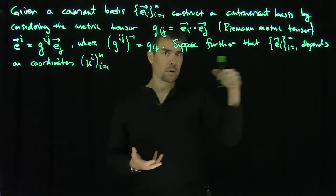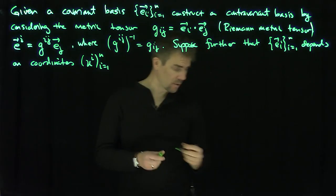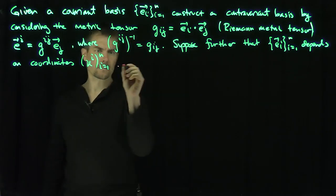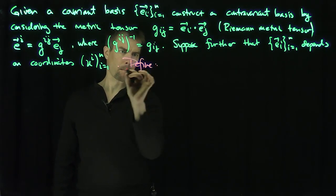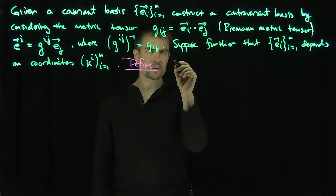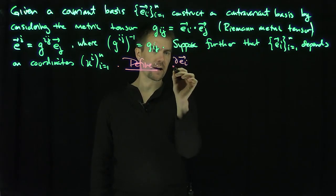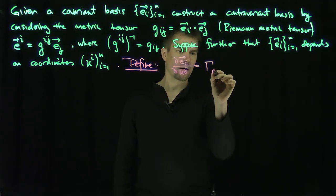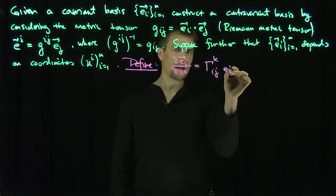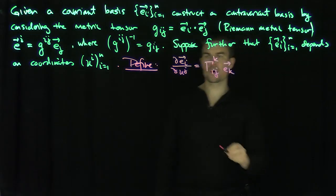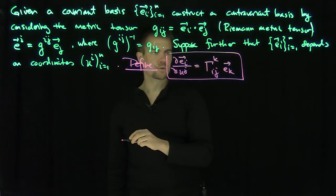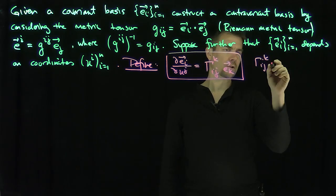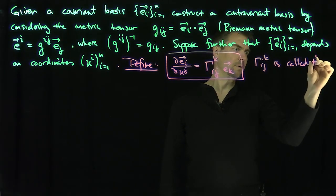Now I want to ask the question: how do these covariant vectors change with respect to the coordinates? In other words, I want to define some symbols. I'm going to look at the partial of e_i with respect to the coordinate u^j. It's going to be Γ^k_ij times e_k. In other words, these partial derivatives can be expressed in terms of the covariant basis, and the coefficients are called the Christoffel symbols, Γ^k_ij.